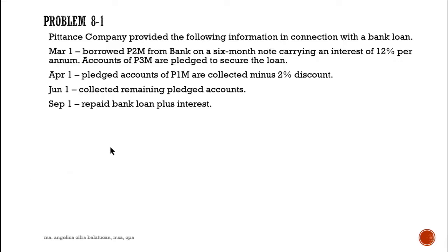On March 1, Pittance borrowed 2 million from the bank on a six-month note carrying an interest of 12 percent per annum. Accounts of 3 million are pledged to secure the loan. On April 1, pledged accounts of 1 million are collected minus 2 percent discounts. On June 1, the remaining pledged accounts are collected. On September 1, the bank loan plus interest is repaid.